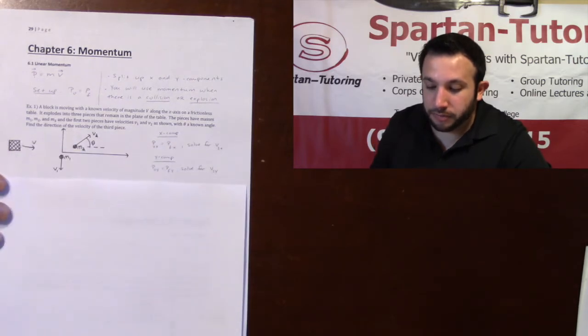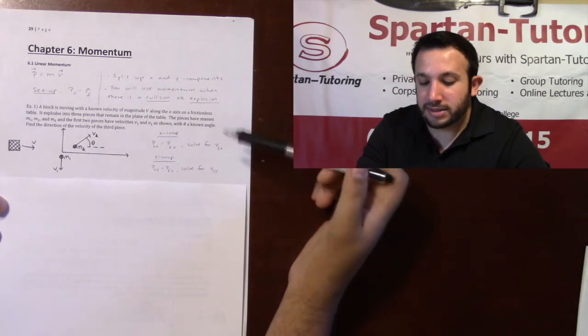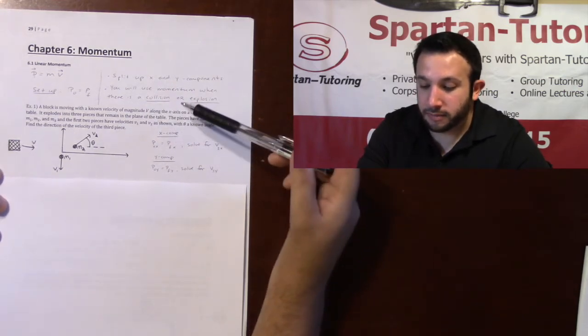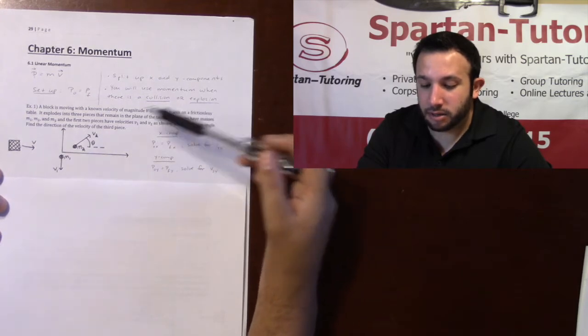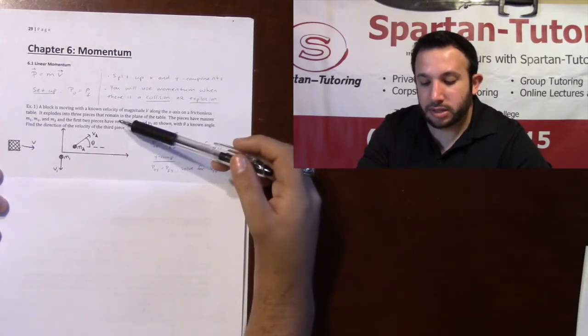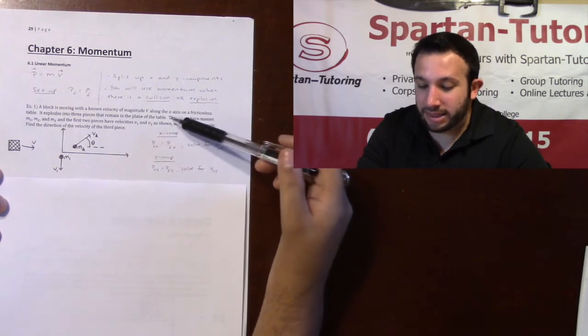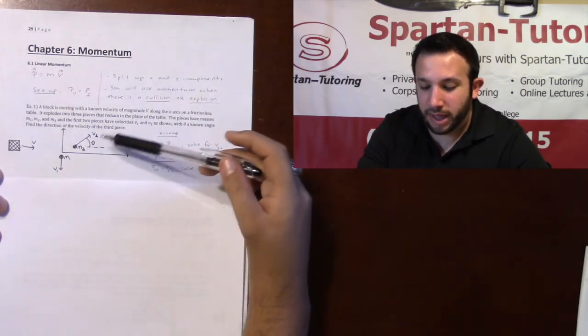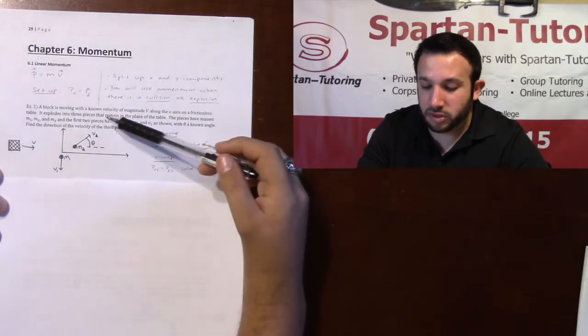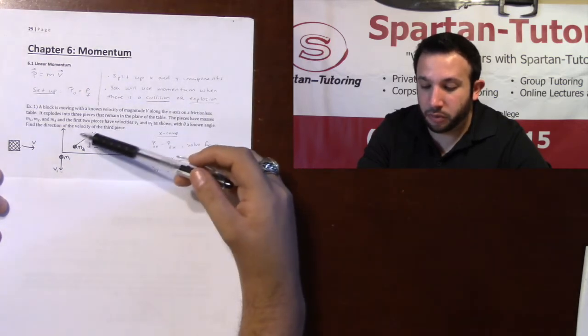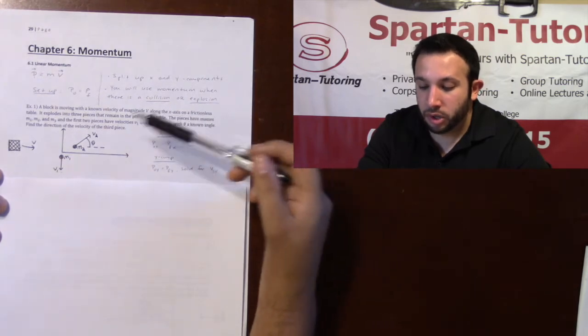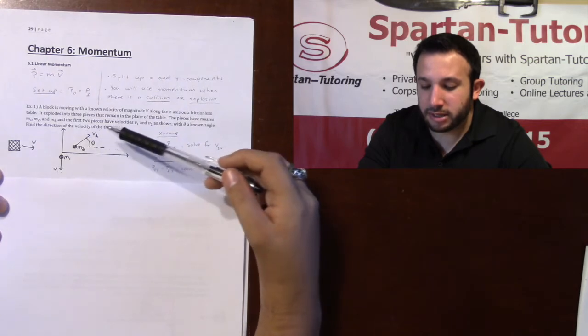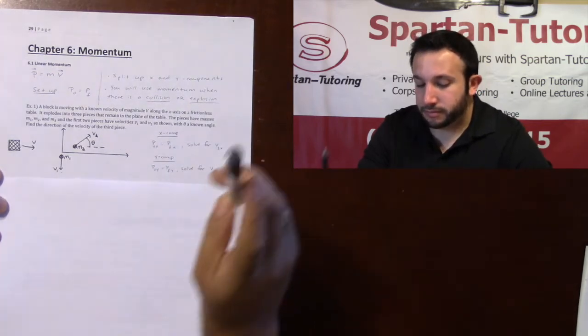Taking a look at this first problem, it says that a block is moving with a known velocity of magnitude v along the x-axis on a frictionless table. It explodes into three pieces that remain in the plane of the table. The pieces have masses m1, m2, and m3, and the first two pieces have velocities v1 and v2 as shown, with theta a known angle. Find the direction of the velocity of the third piece.